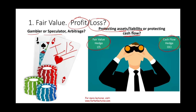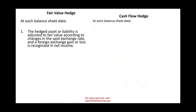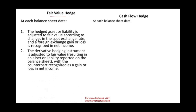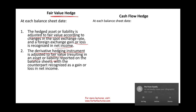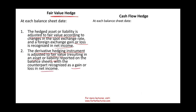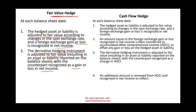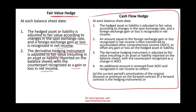We talked about these in the prior session. In this session, we will see how we account for a fair value hedge. Here are the steps: the hedged asset or liability is adjusted to fair value according to the spot rate, and any income or loss is recognized in net income. The derivative hedging instrument is also adjusted to fair value as an asset or liability, with the counterpart recognized as a gain or loss in net income. The cash flow hedge had four steps and was much more involved — the fair value hedge is simpler.